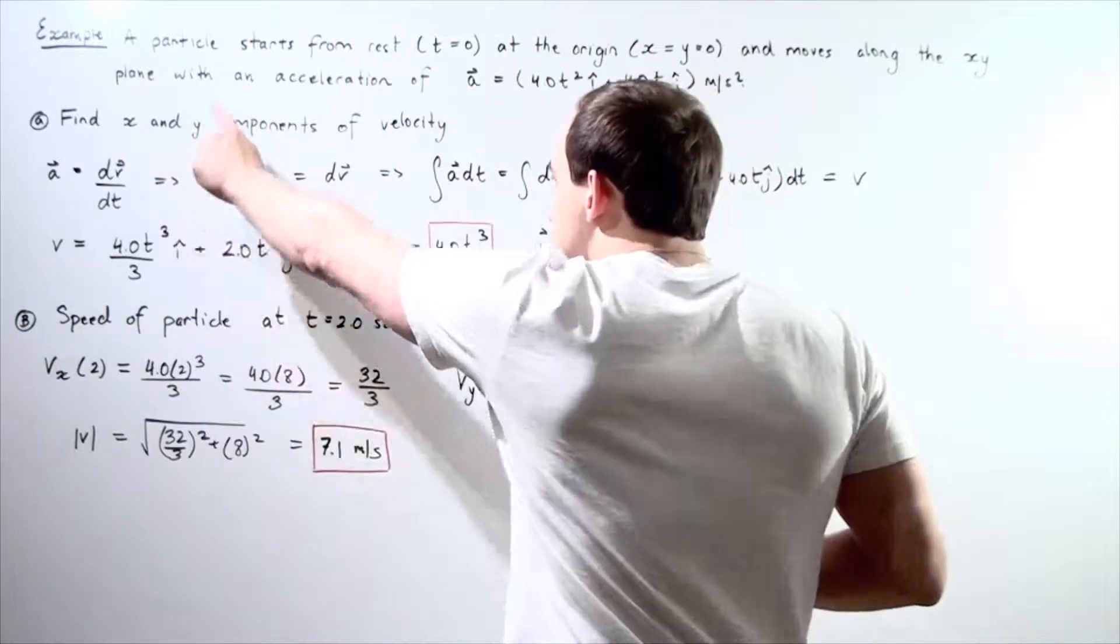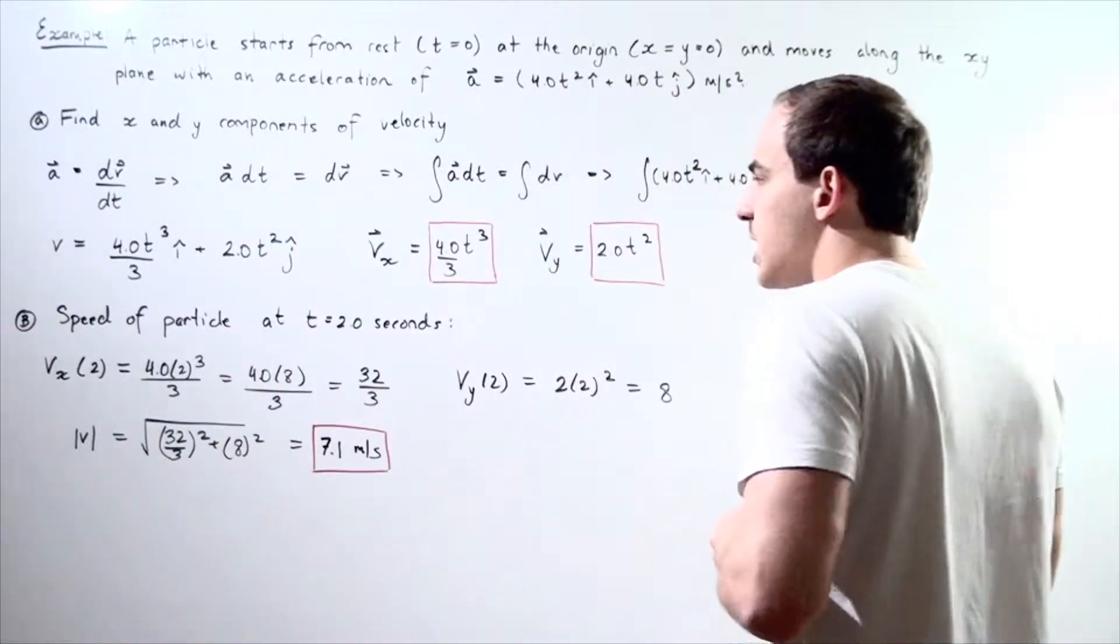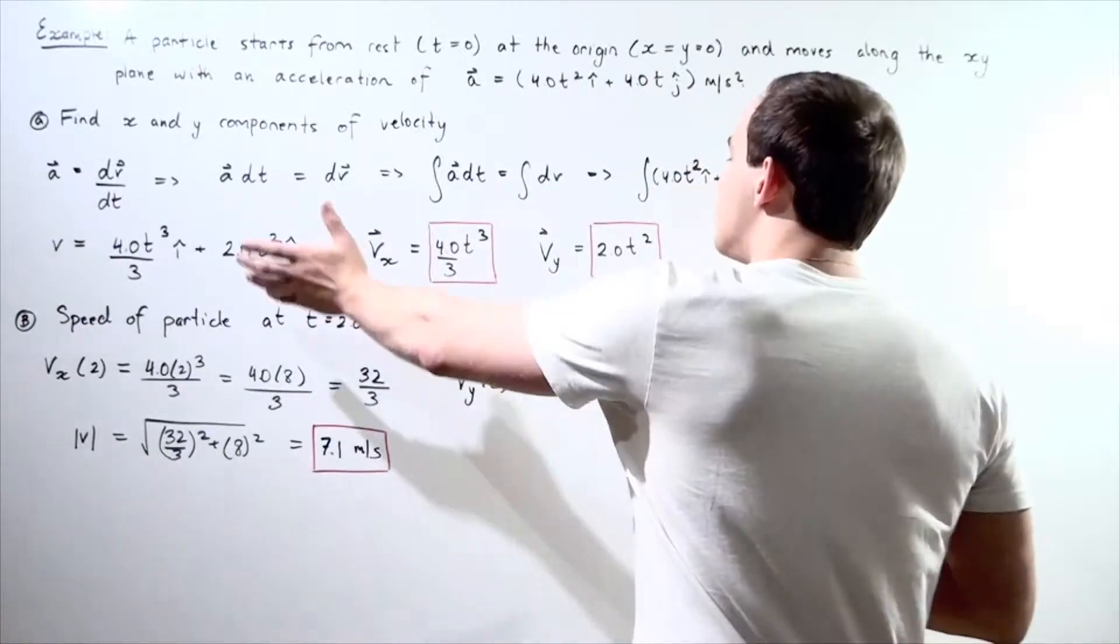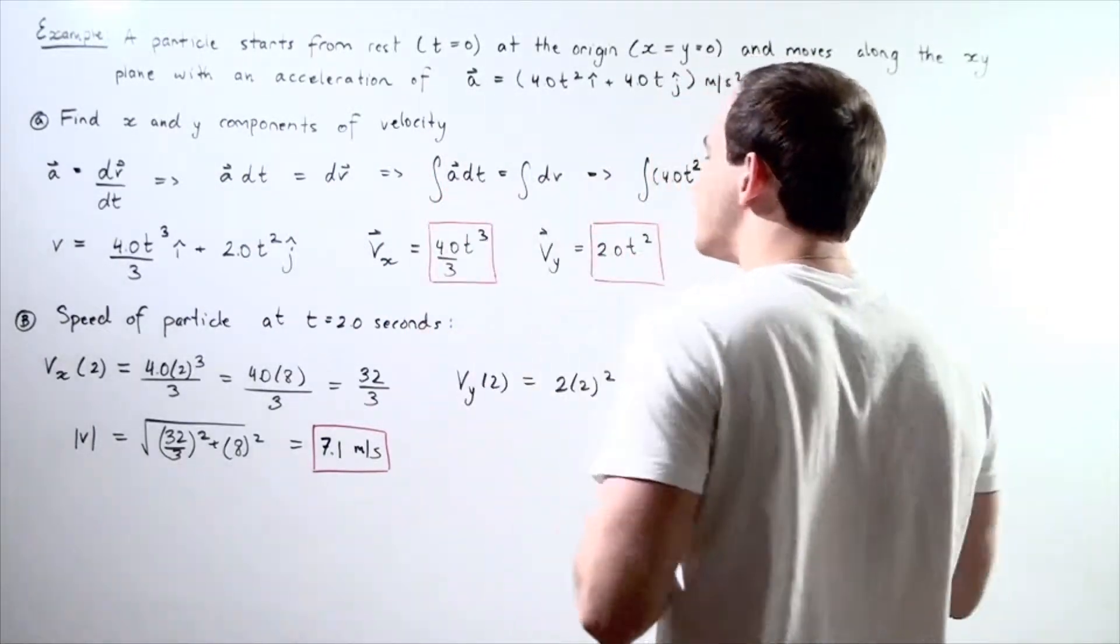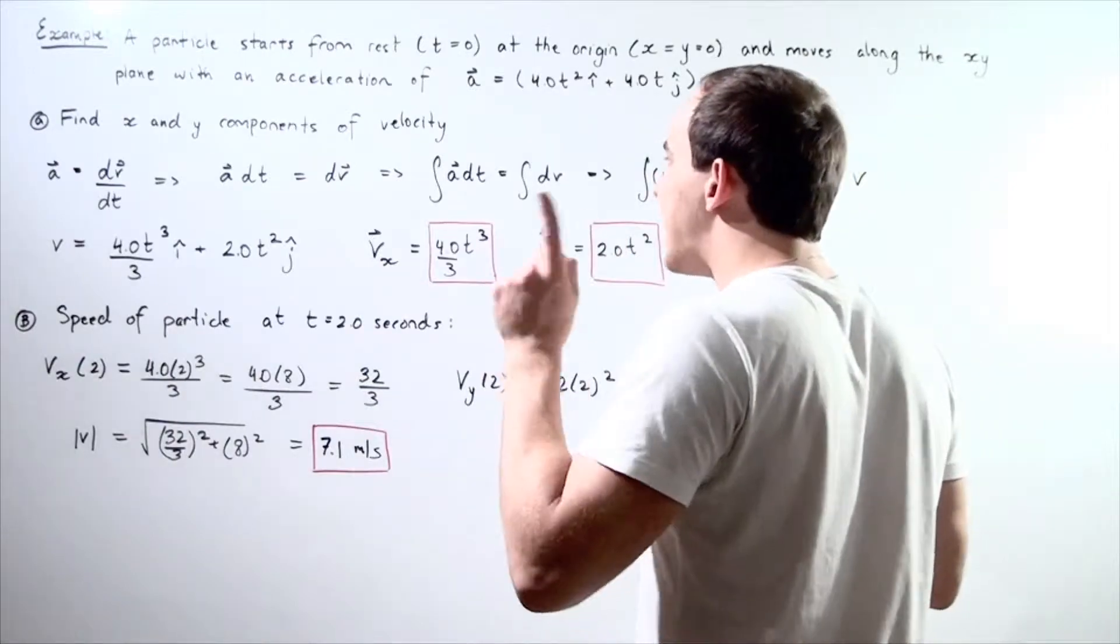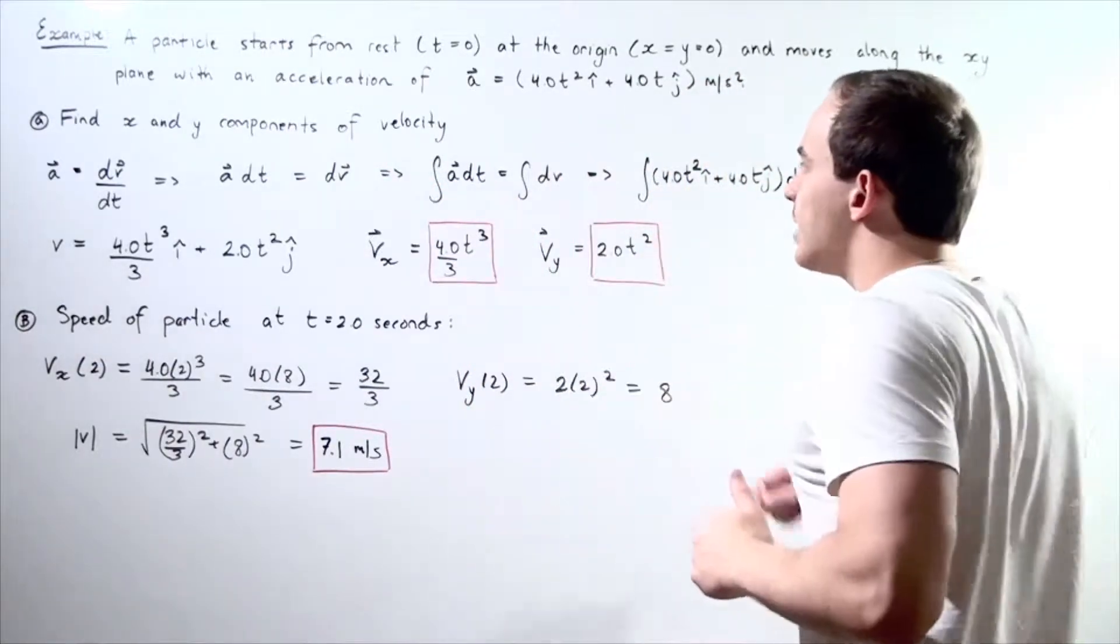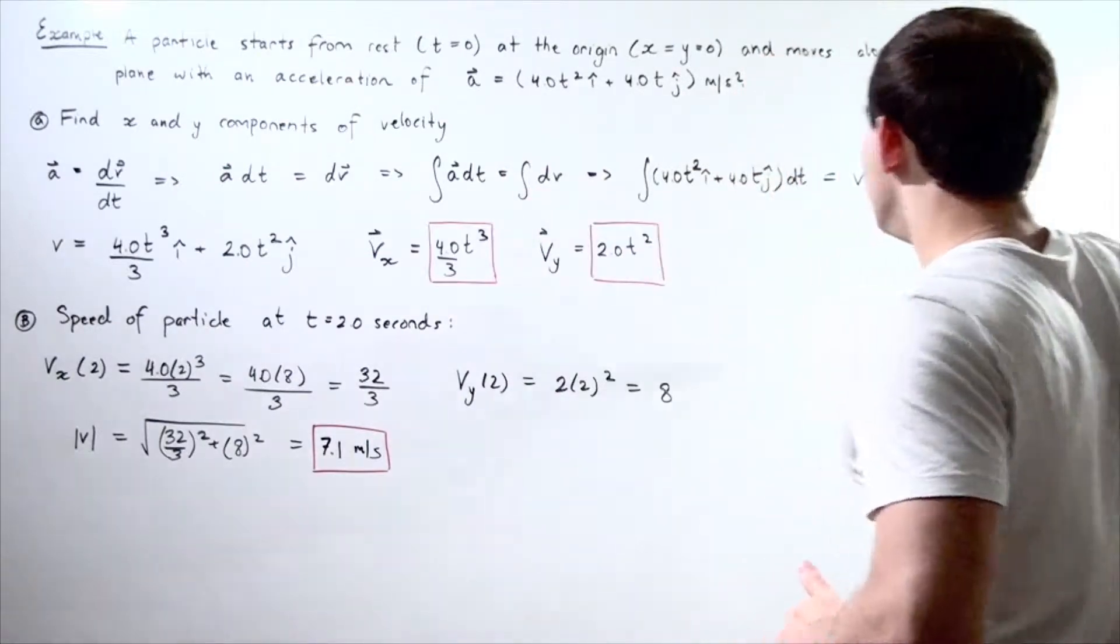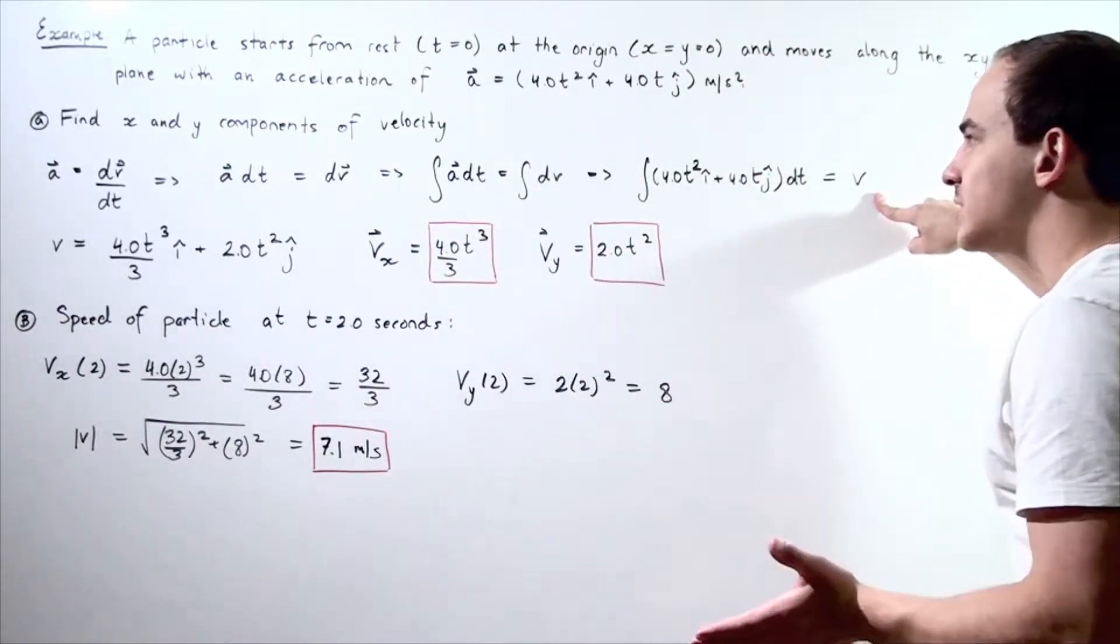Now let's take the integral of both sides. So whatever we do to the left term, we have to do the same exact thing to the right term. So taking the integral of the right side will give us v. So this term will be equivalent to simply v, our velocity vector.